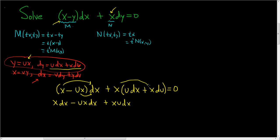And then here we have x squared du. And this is equal to zero.